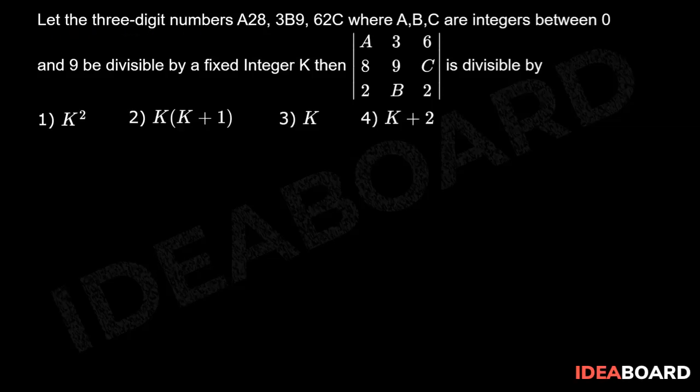Let the three-digit numbers A28, 3B9, 62C, where A, B, C are integers between 0 and 9, be divisible by a fixed integer K. Then, the determinant of A36, 89C, 2B2 is divisible by...